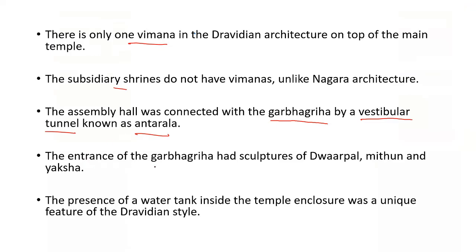On the entrance of the Garbhagriha in Dravidian style, you can find sculptures of Dwarpalas, Mithuna, and Yaksha. In Nagara style of architecture, on the entrance of the Garbhagriha we find images of river goddesses like Yamuna, Saraswati, and Ganga. But in Dravidian style, sculptures of Dwarpalas, Mithuna, and Yaksha are present on the entrance of the Garbhagriha. In addition, a water tank or water reservoir is present in the temple premises.